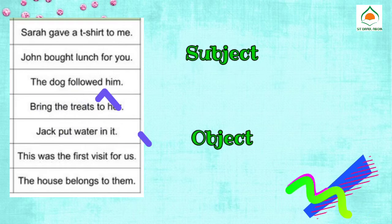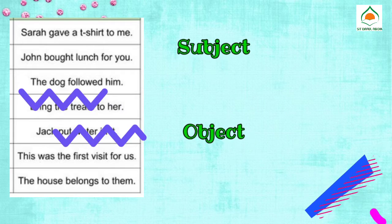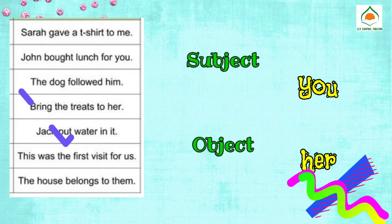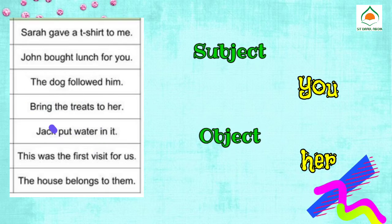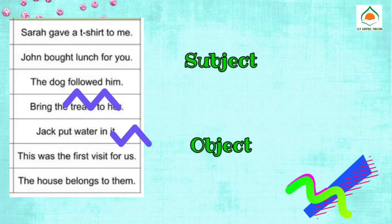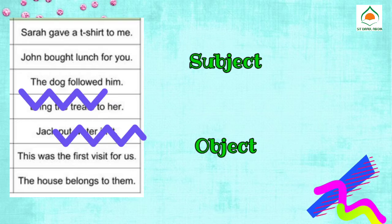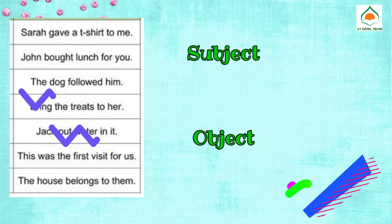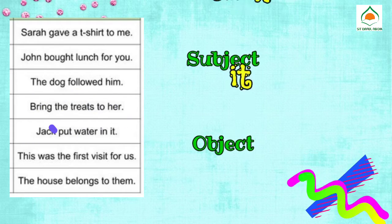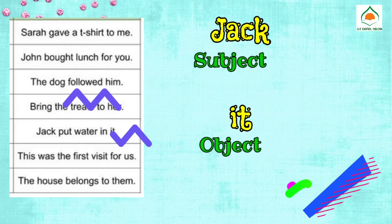Four: You bring the treats to her — the subject is you, the object is her. Five: Jack puts water in it — the subject is Jack, the object is it.